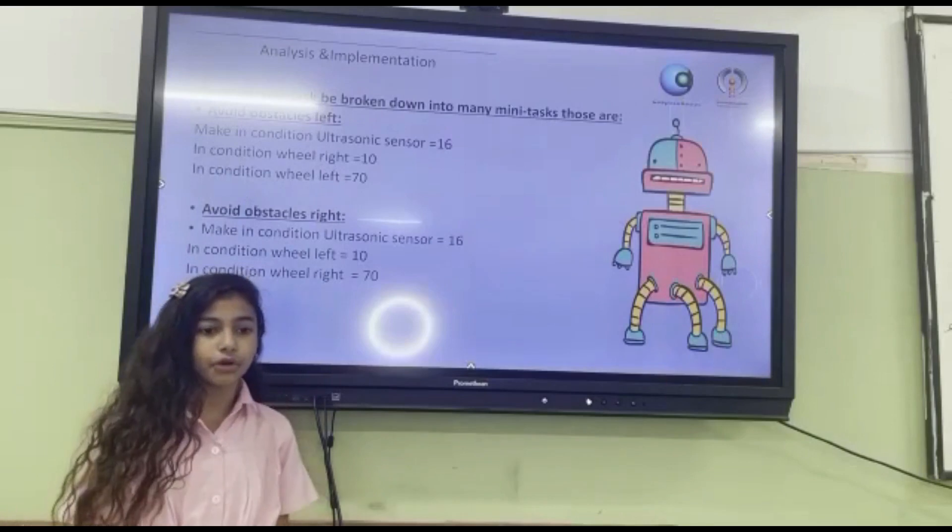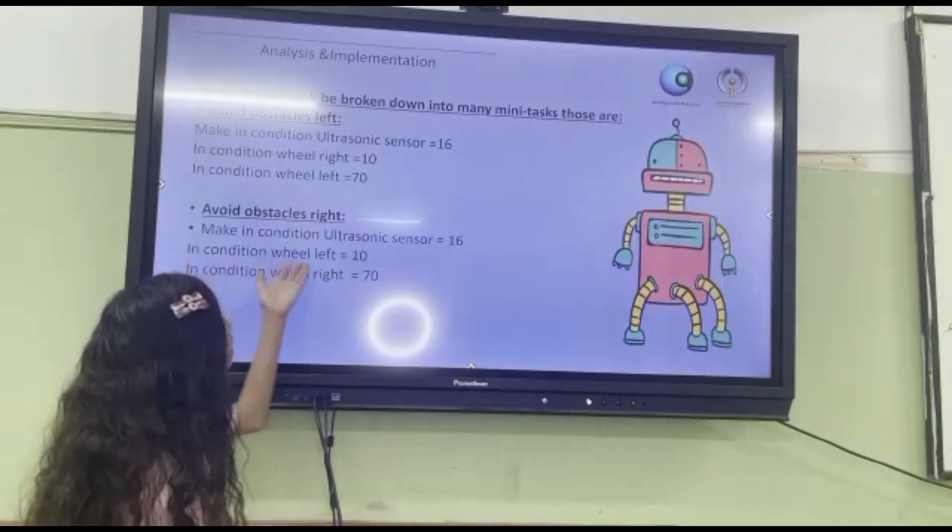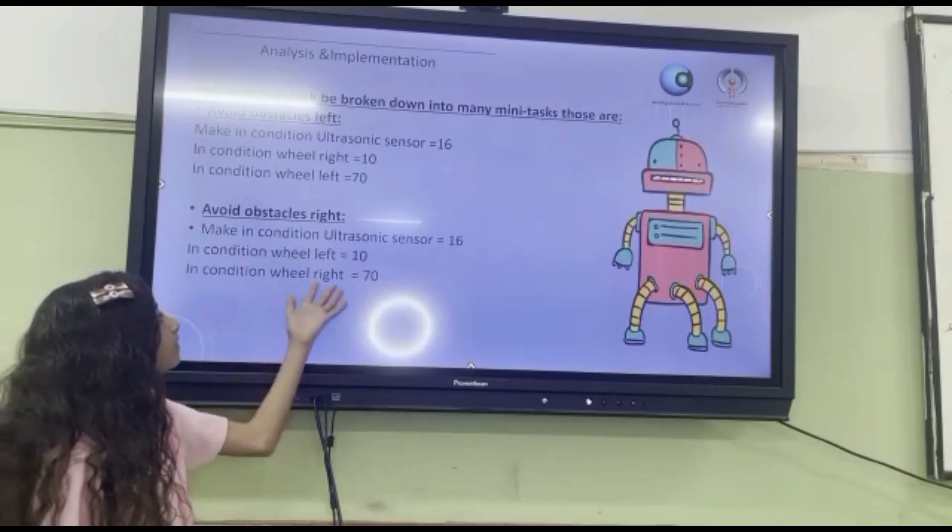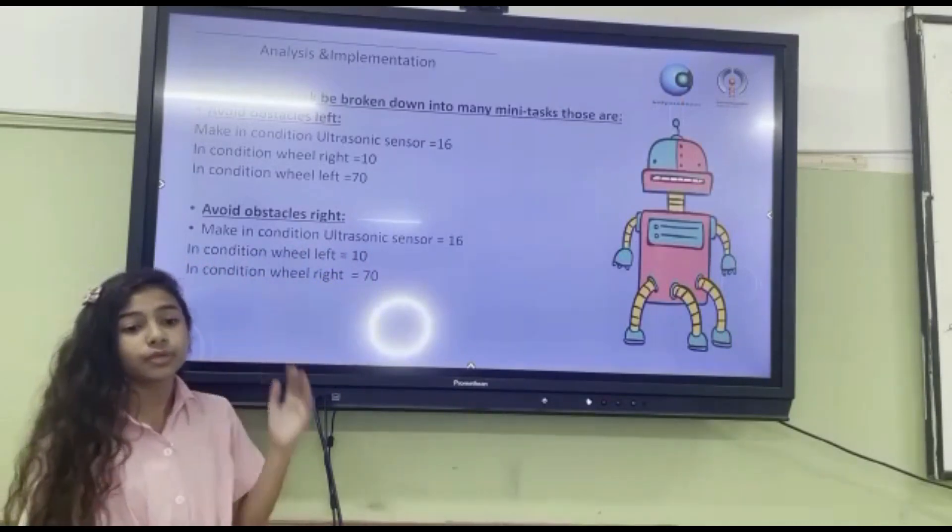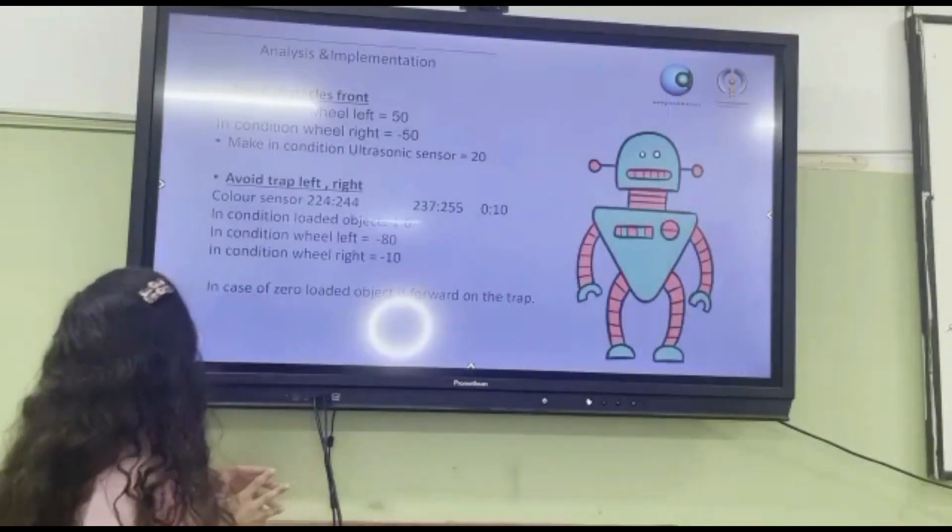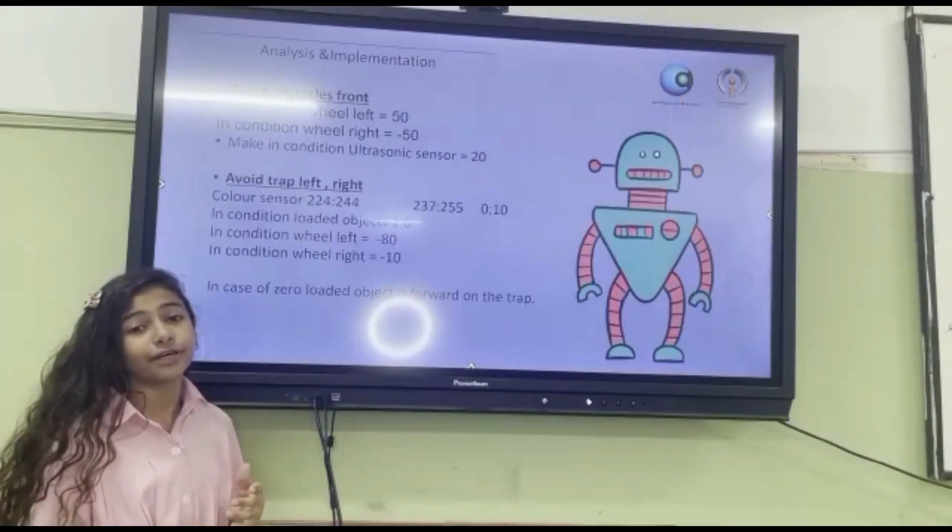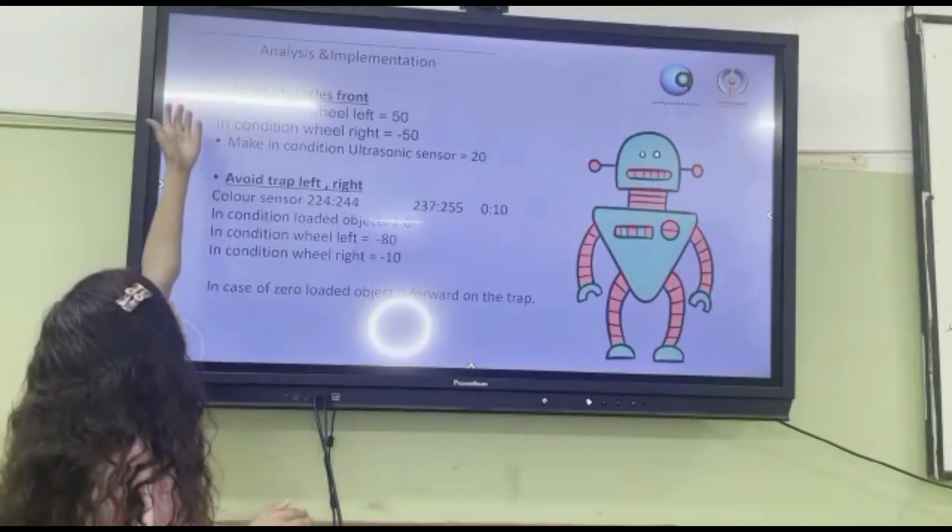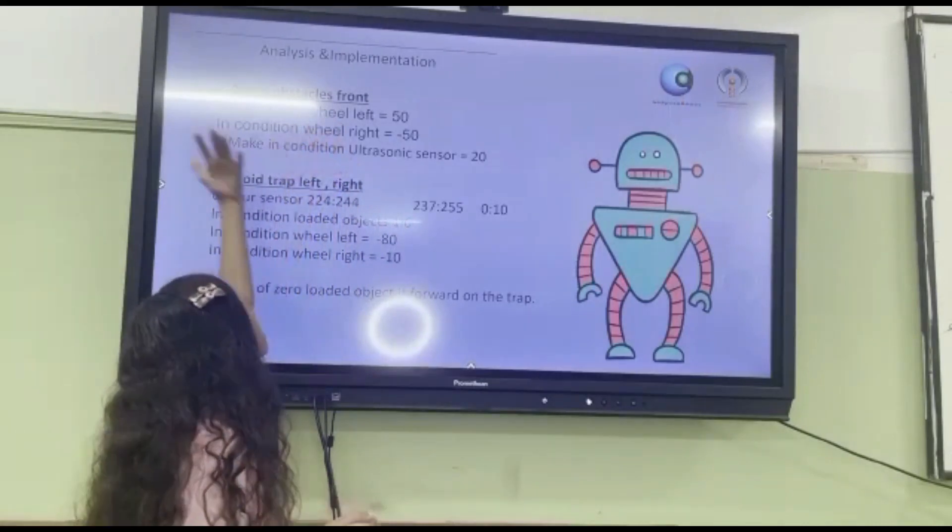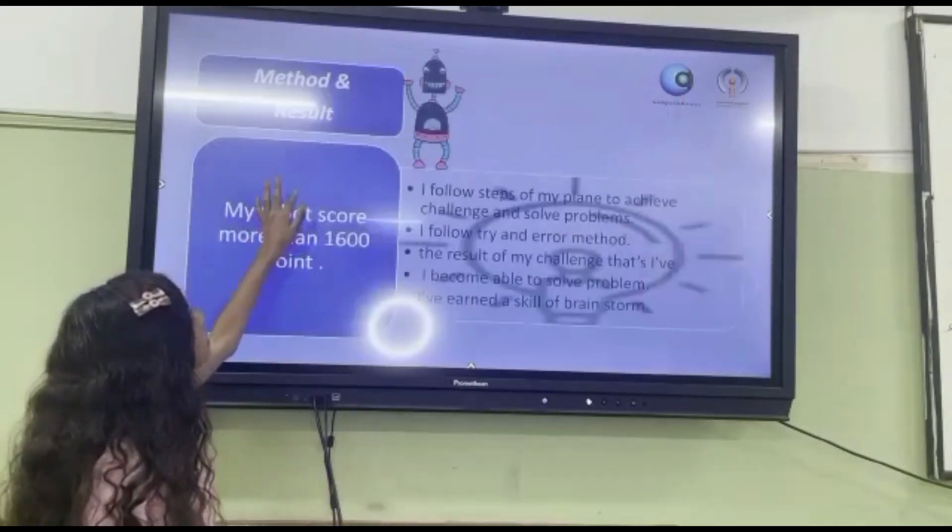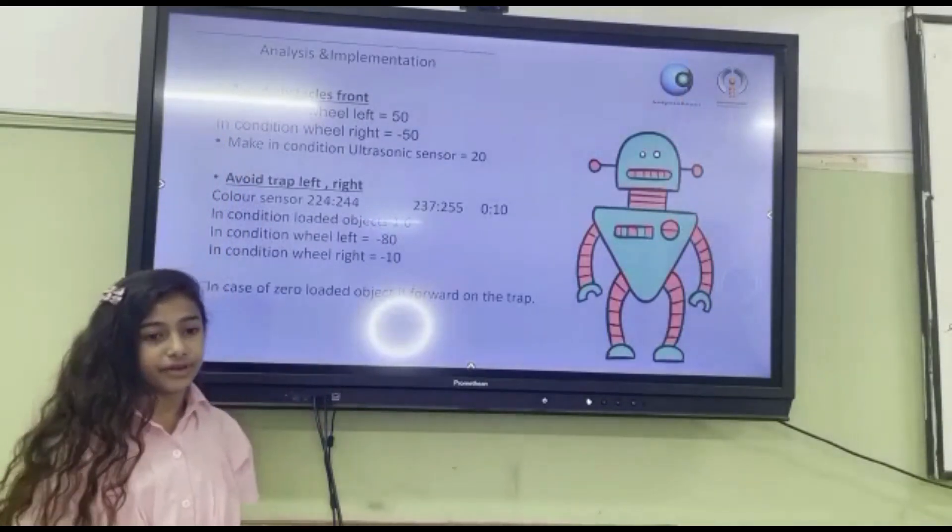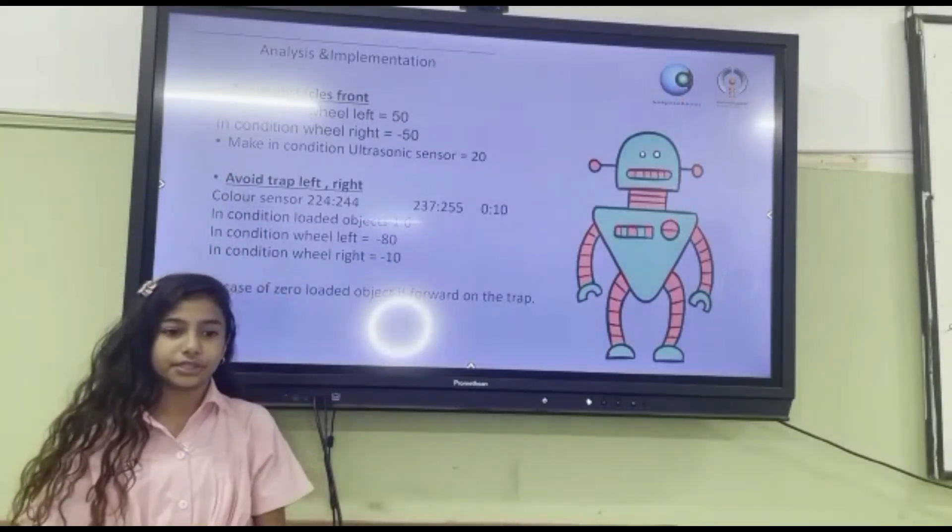Avoid obstacles right: make in condition ultrasonic sensor equals 16, in condition wheel left equals 10, in condition wheel right equals 70. Avoid obstacle front: in condition wheel left equals 50, in condition wheel right equals negative 50.